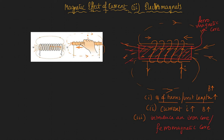The moment you introduce a ferromagnetic core, the end which was north and the other end which is south continues to be the same, but the field strength increases by a factor of a thousand times. The ferromagnetic core has that property that it increases the field strength — and suddenly you have a magnet. This iron core, this ferromagnetic core, suddenly becomes a magnet, and we call this an electromagnet.